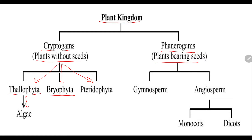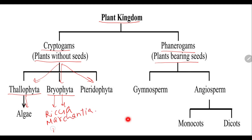Next, we talk about the bryophytes. Bryophytes are also called amphibious plants because they require water as well as land for the completion of the life cycle. There are lower members and higher members of bryophytes. Some examples include Riccia, Marchantia, and Funaria — all of these are examples of bryophytes.